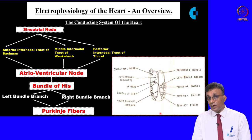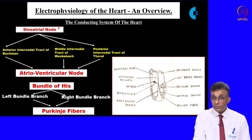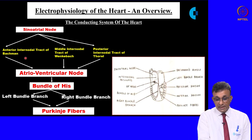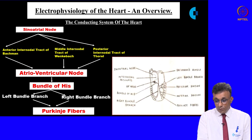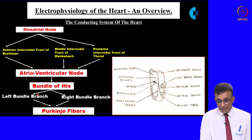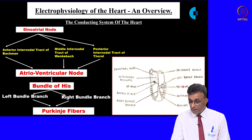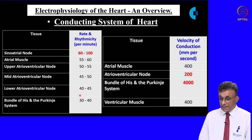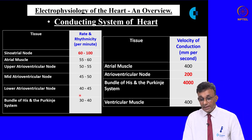This slide gives an overview of the conducting system. The SA node is the primary pacemaker where impulses are spontaneously generated. From the SA node, three inter-nodal tracks link it to the AV node. The AV node continues as the bundle of His, which terminates as the Purkinje fibers. The bundle of His divides into a left bundle branch and a right bundle branch, with the left bundle branch having an anterior and posterior division.